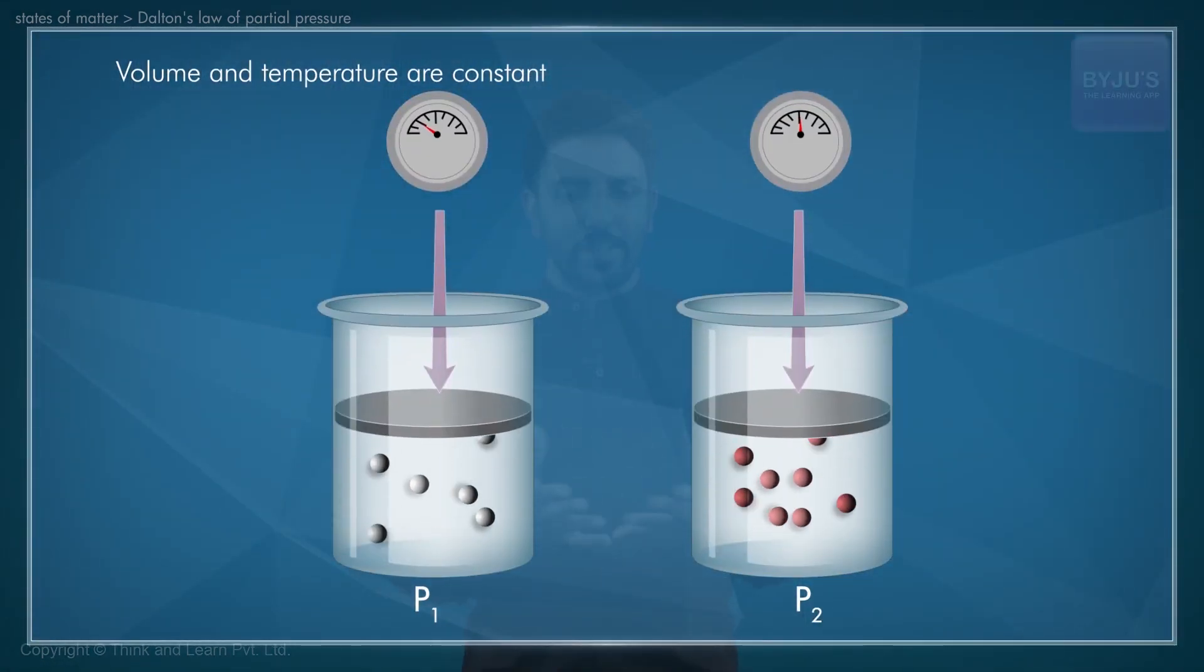We could illustrate Dalton's law of partial pressures by means of this visual. Here we have two different gases, each inside a jar having the same volume. We also keep the temperature constant, and as you can see, the jars are similar in every possible way except that the pressure readings in each of the jars is different.